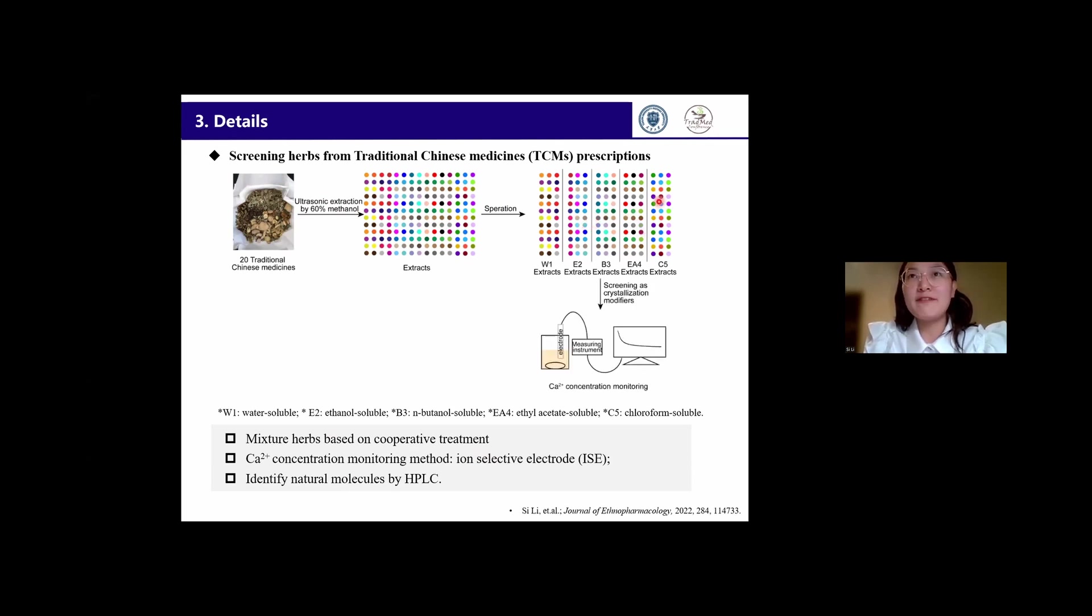Then the inhibitory effects of these extracts are evaluated by quantifying the inhibition percentage of calcium oxalate crystallization kinetics. Then the herb extracts displaying high inhibition effects will be further characterized by HPLC, and then the effective components will be identified.